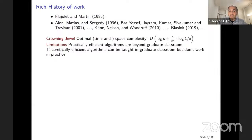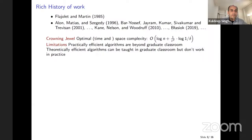The only issue with these algorithms is that the practically efficient algorithms have analysis that is beyond the graduate classroom — most places don't even teach the analysis to graduate students. The analysis of practically efficient algorithms is under the assumption of perfect random hash functions. The theoretically efficient algorithms are taught in graduate classrooms but they don't work in practice, so there's no point implementing them. That's an unsatisfactory situation because here is a very beautiful, simple problem where we can't teach an algorithm with analysis that one can go and implement.